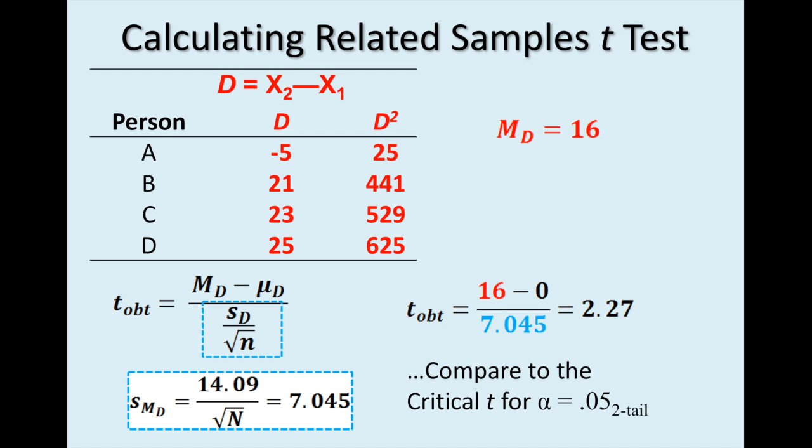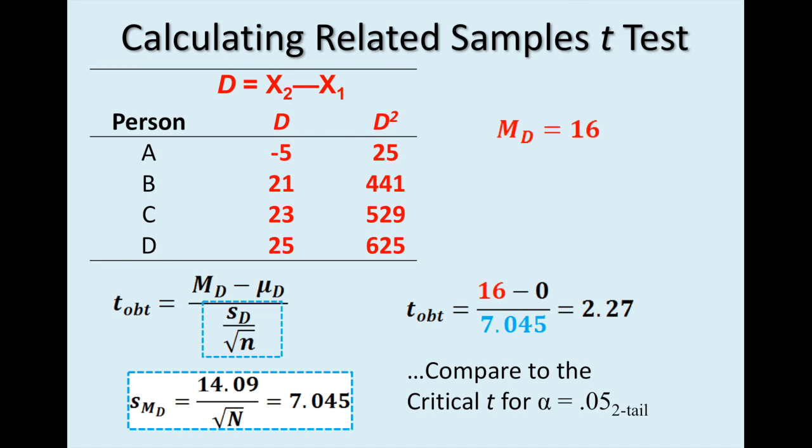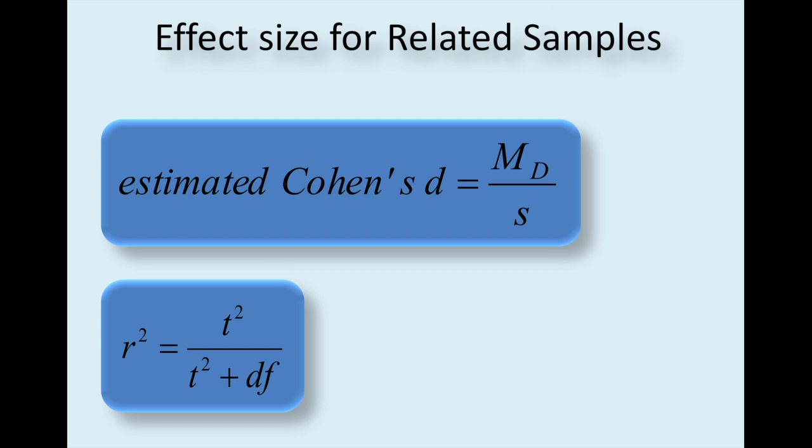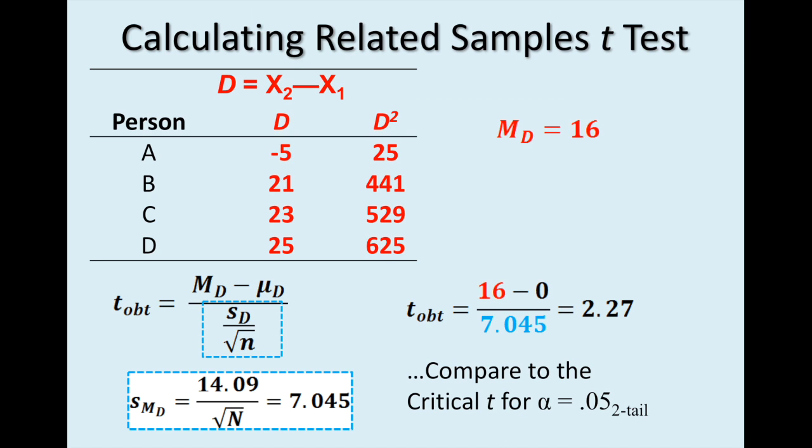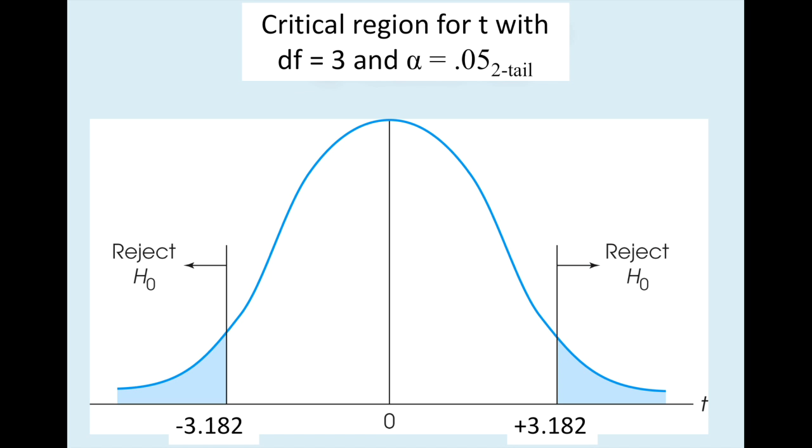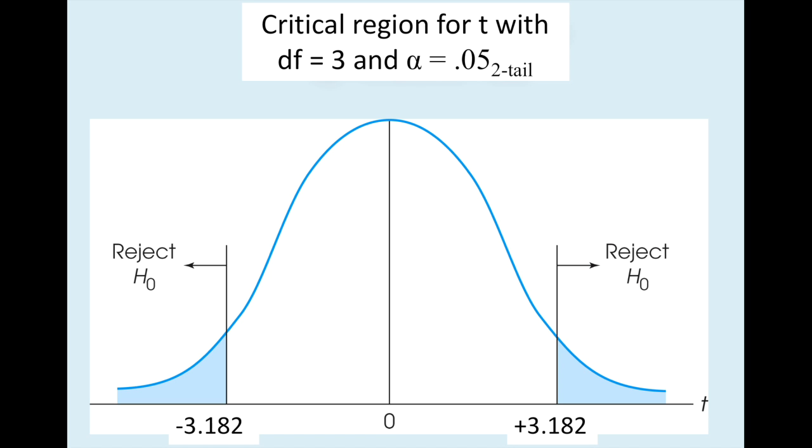Let's see if that was enough to reject our null if we had a critical value of T set at 0.05, and it was 2 tail. So you have to look at your chart. And you should see in your T table that if you have 3 degrees of freedom and alpha set at 0.05, it's 2 tail, you get a T crit of plus or minus 3.182. And what was our T obtained? Our T obtained was 2.27, so we did not reject the null hypothesis.